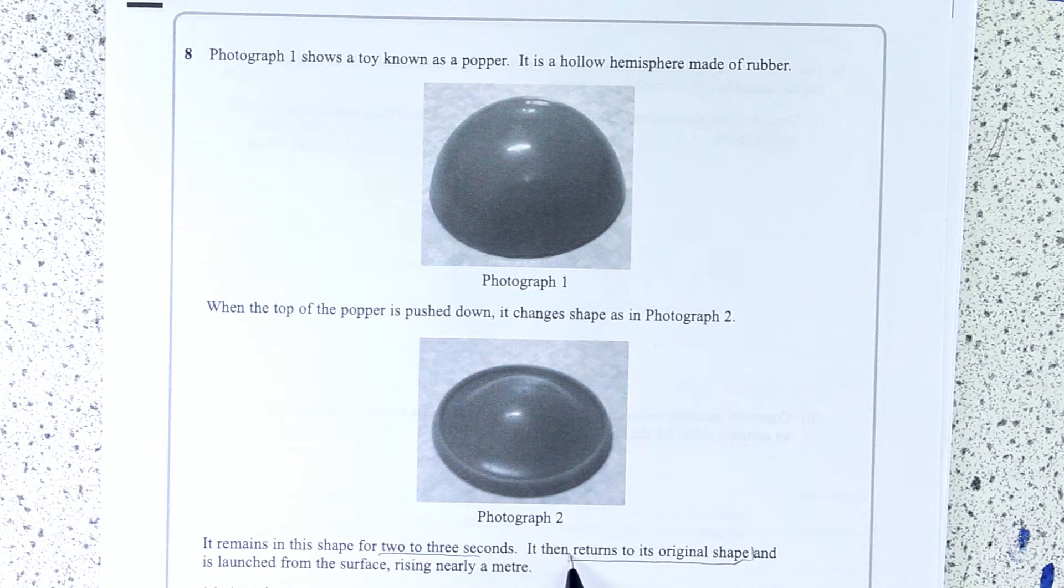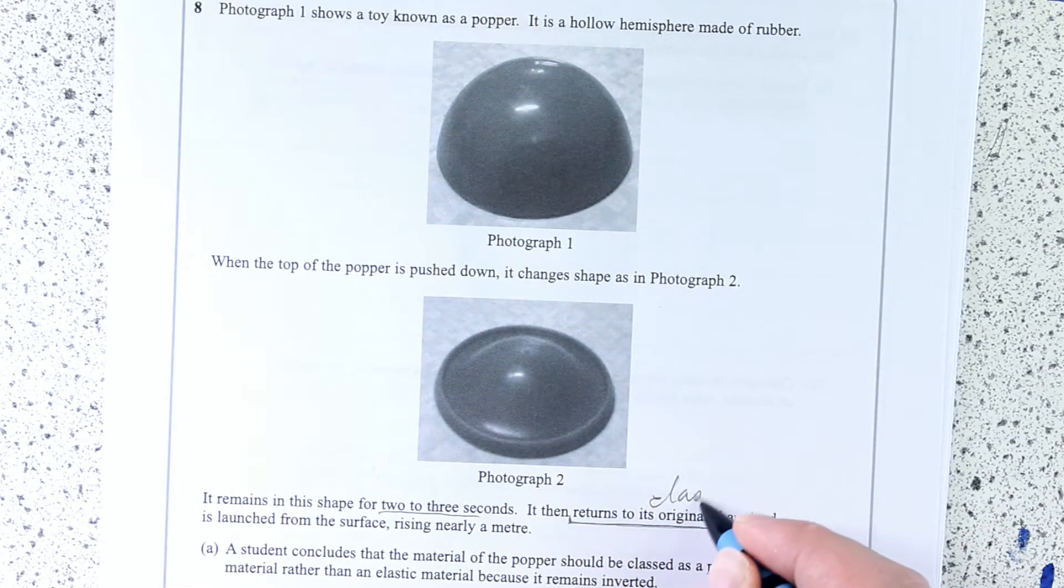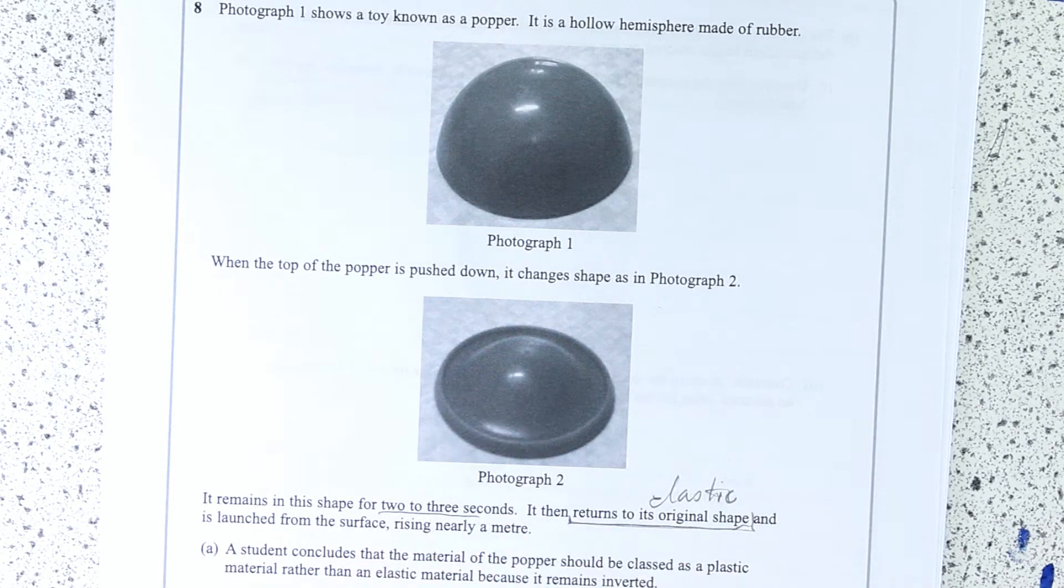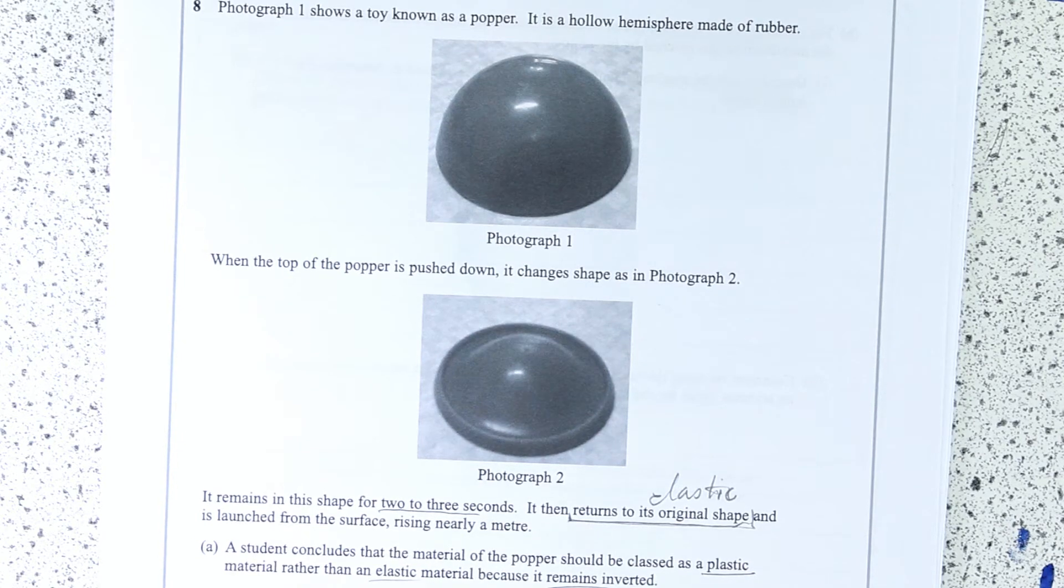So it remains in this shape for two to three seconds and then returns to its original shape. Now hopefully that's ringing bells. Something which returns to its original shape is an elastic behaviour. So this first part is certainly about material properties. A student concludes the material of the popper should be classed as plastic rather than elastic because it remains inverted. Whether you think this is correct, explain.